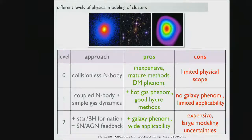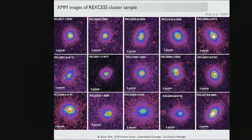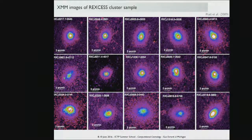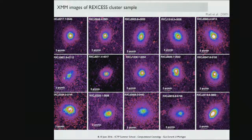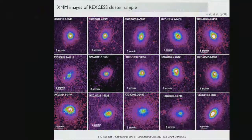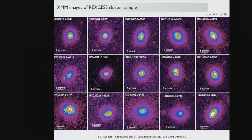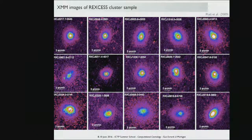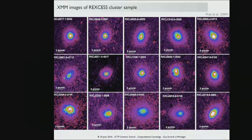Here's real data — a rogues gallery of local clusters from the REXS sample of Pratt et al. 2009. The surface brightness is shown in the color contours. These systems are fairly round and many appear close to hydrostatic equilibrium, although there are some isophotal shifts visible in some systems — the center of the outer isophotes is displaced from the inner isophotes, showing evidence of merging even in these relaxed-looking images.